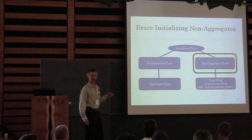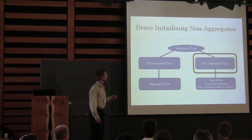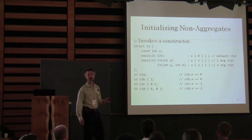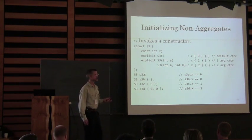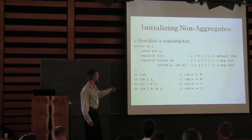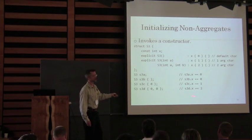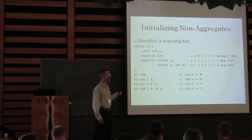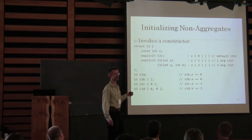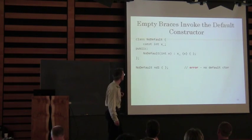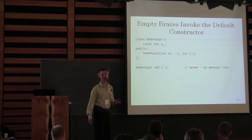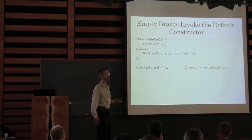Done with aggregates. Now we move on to the more interesting types. For a non-aggregate, the brace initialization will do its best fit on the constructor call. Here I've got brace initialization for three different kinds of constructors, and it always calls the right kind of constructor. At this level, if you have a user-defined type, you don't have to do anything special to support brace initialization — the compiler does it for you. Empty braces invoke the default constructor; if there is no default constructor, the compiler will yell at you.